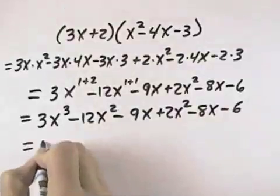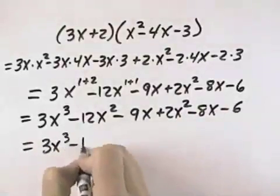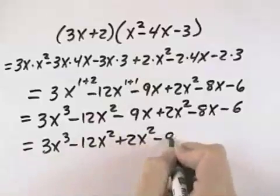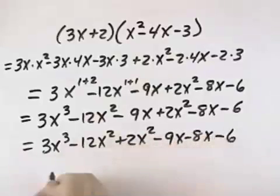Putting like terms together, we've got 3x cubed. We've got a minus 12x squared and a plus 2x squared. A minus 9x and a minus 8x, and finally a minus 6.